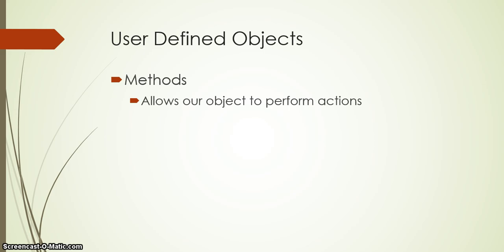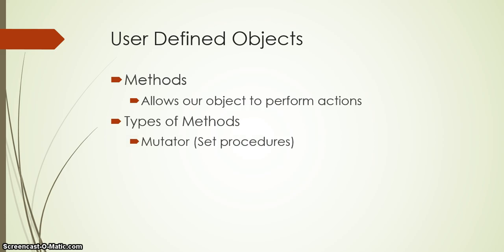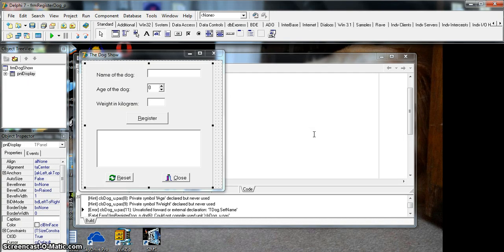If we want to change the value of an attribute or get the value of an attribute, we would do that via methods that we put under the public heading so that other programs can use them. There are five main types of methods. The first one is the mutator method — we use this as a set method. It sets the values of attributes and they are procedures.